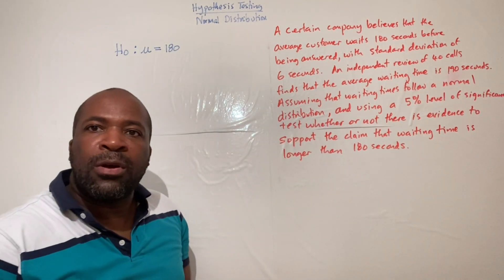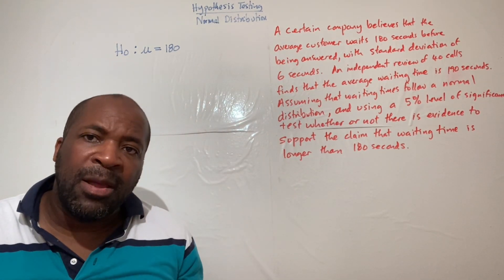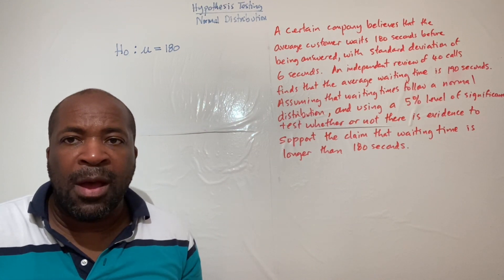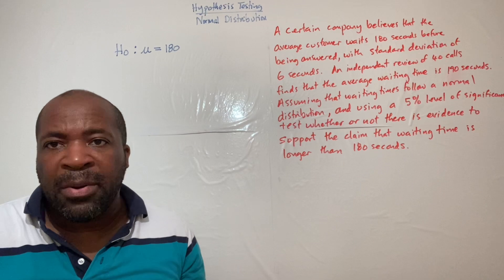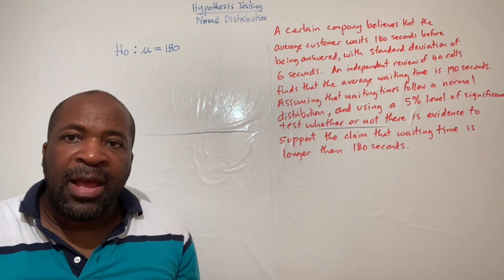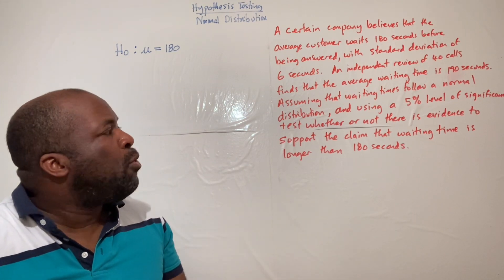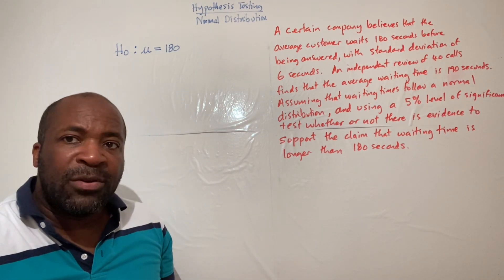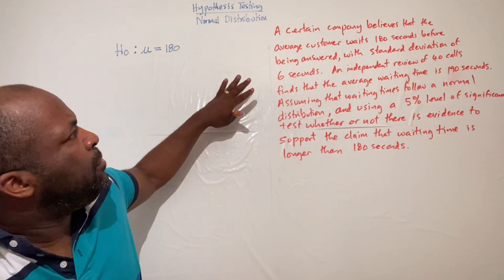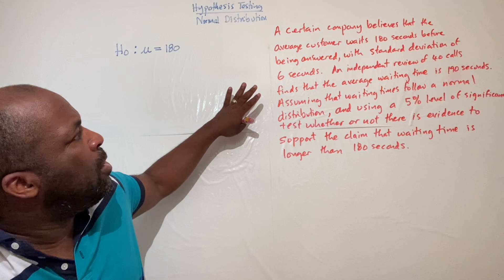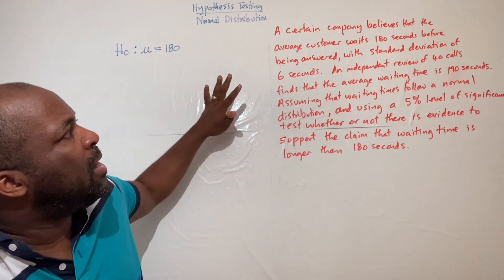We summarize the null hypothesis as H-naught: μ equals 180. That is the historical record. A hypothesis is a claim or belief that we hold to be true, which may be based on past experience or on examining the evidentiary record.